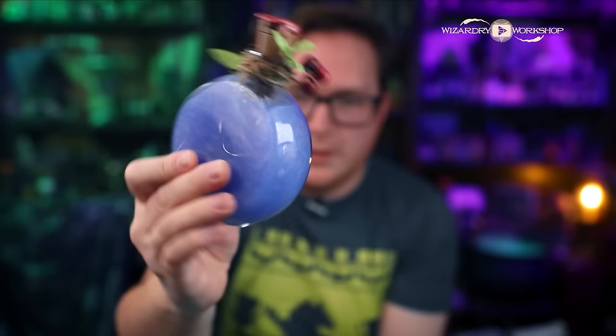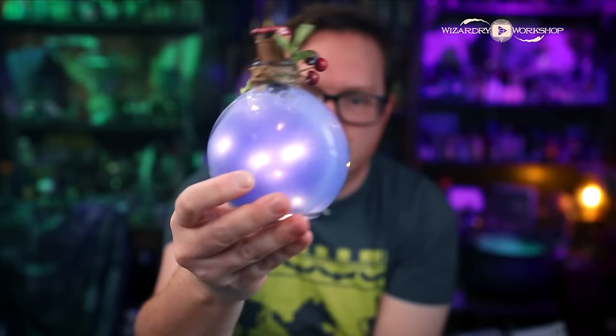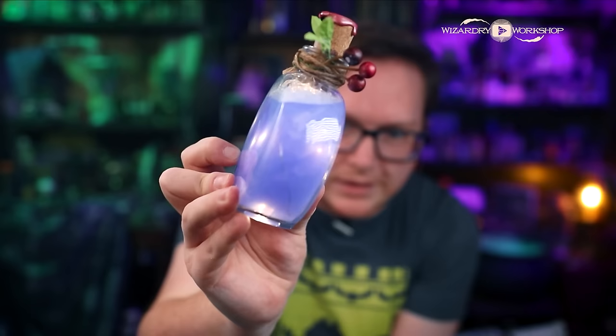And there is my Yule Goat Conjuring Concoction Potion. You can see the cool swirlies in there. And if we turn the lights on, you can see the swirls around the lights. It's really cool to see them glowing inside the bottle with those magical swirls.